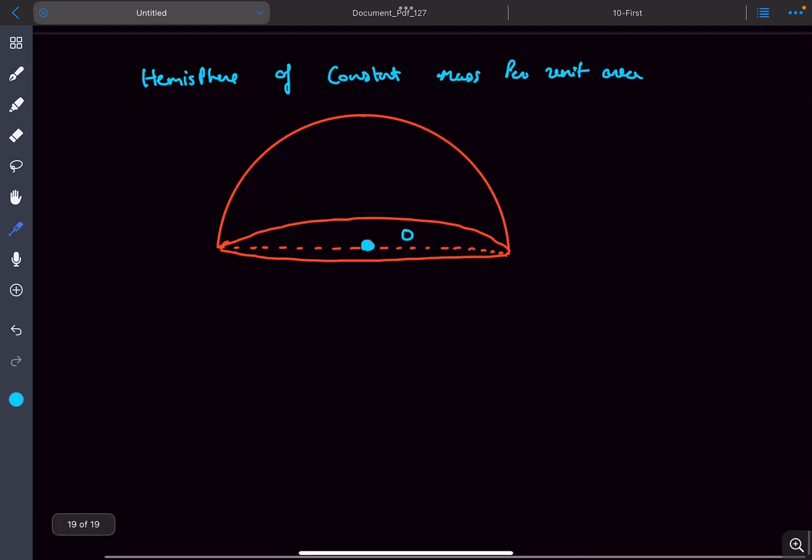The first concept required is that for a hemisphere with constant mass per unit area, the center of mass of this hemispherical shell lies at a distance R/2 above the vertex of the hemisphere.